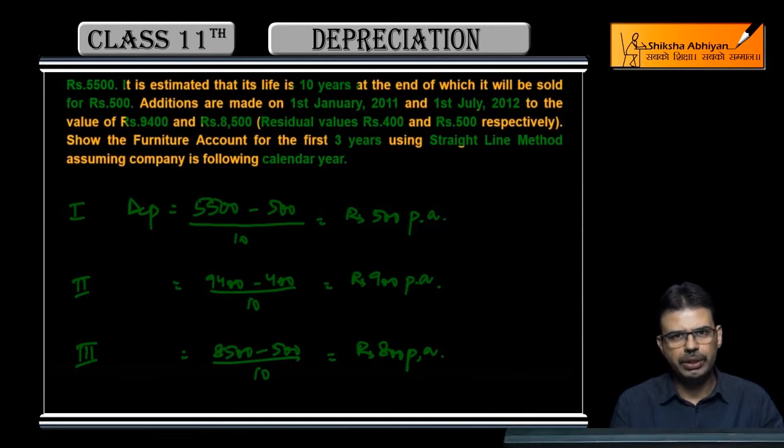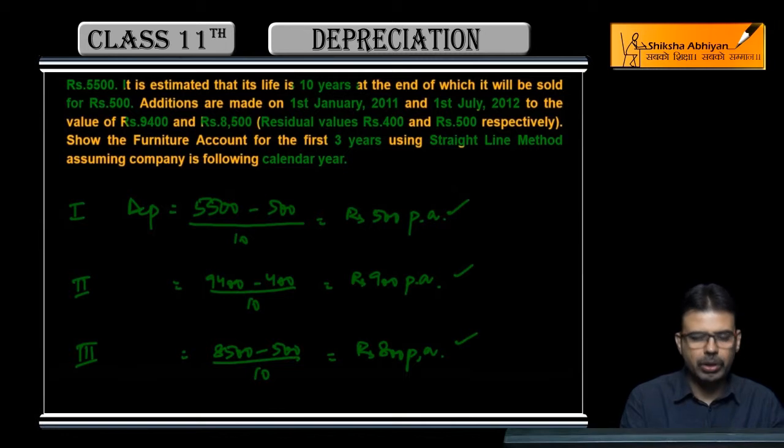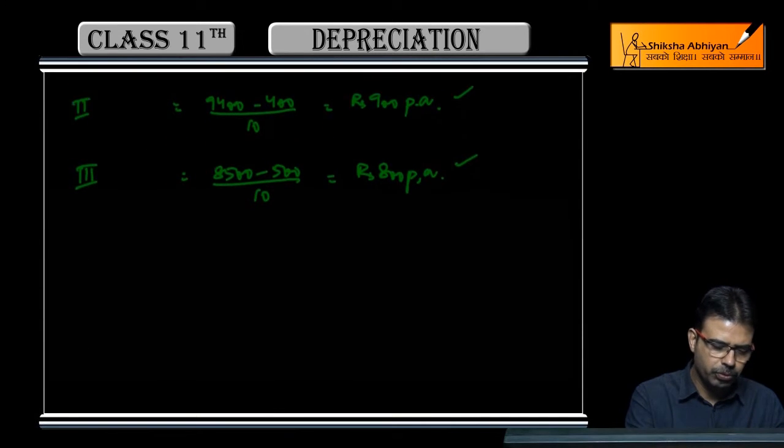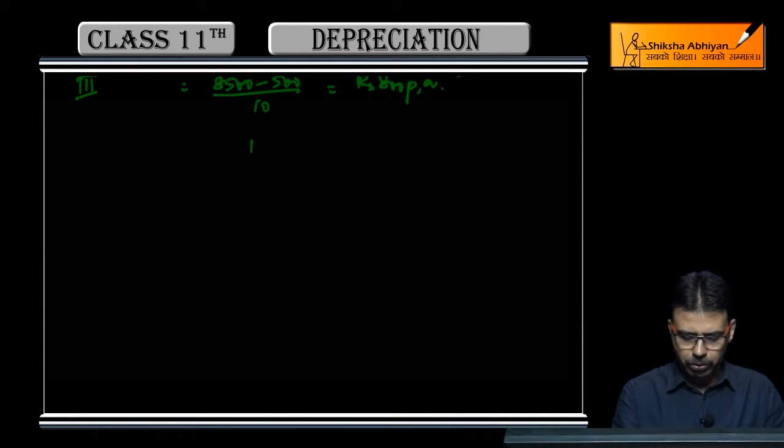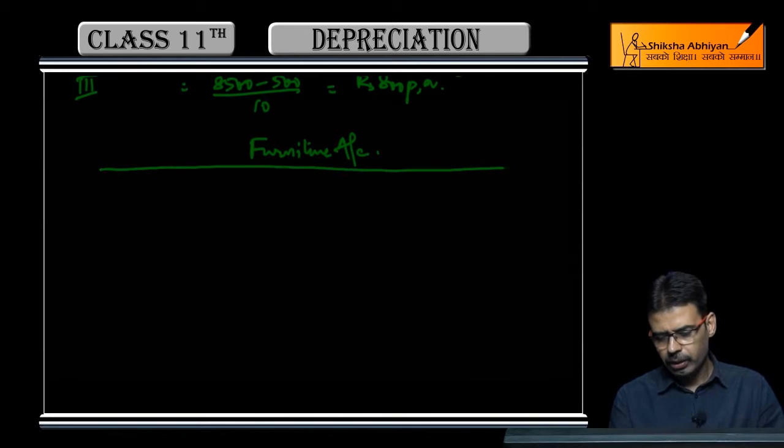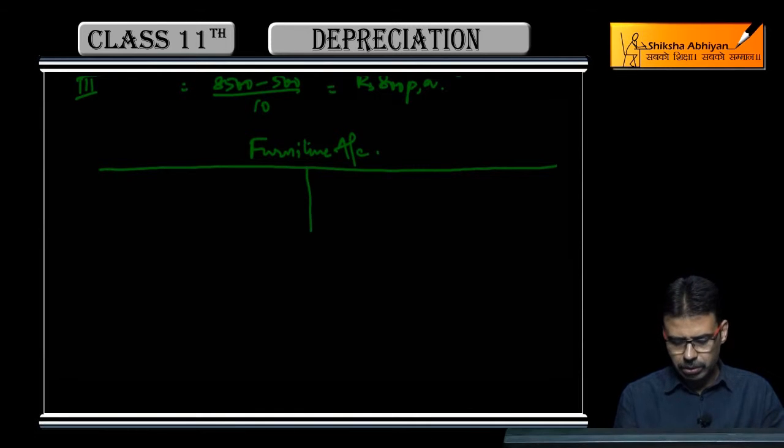We have calculated per annum depreciation for all three furniture items. Now keep these figures in mind, and I will show you how to make the furniture account in proper format: Date, Particulars, Amount, Date, Particulars, Amount.